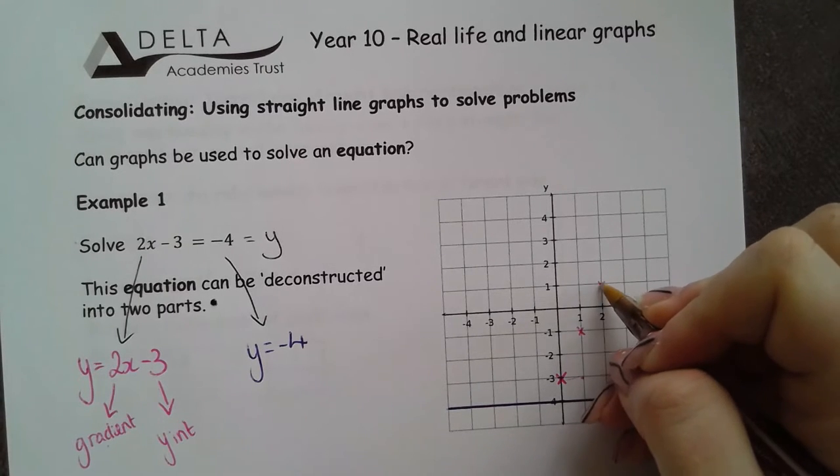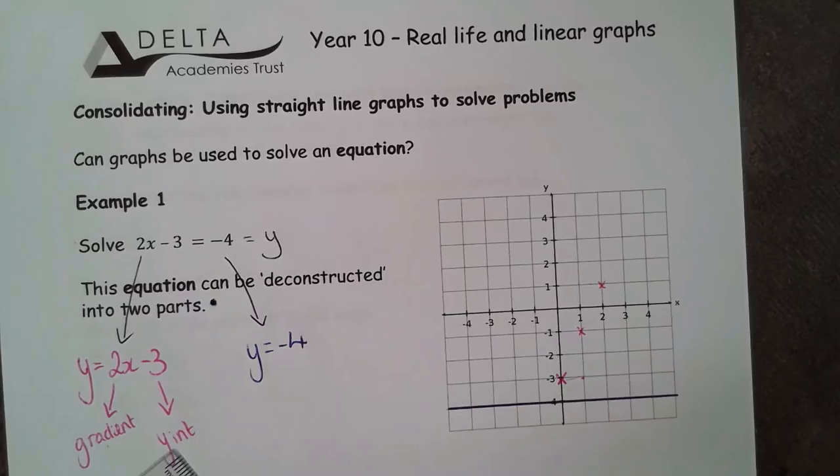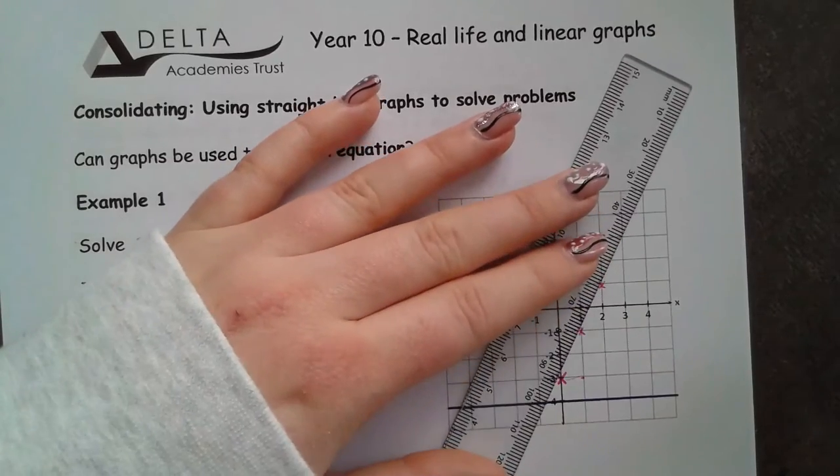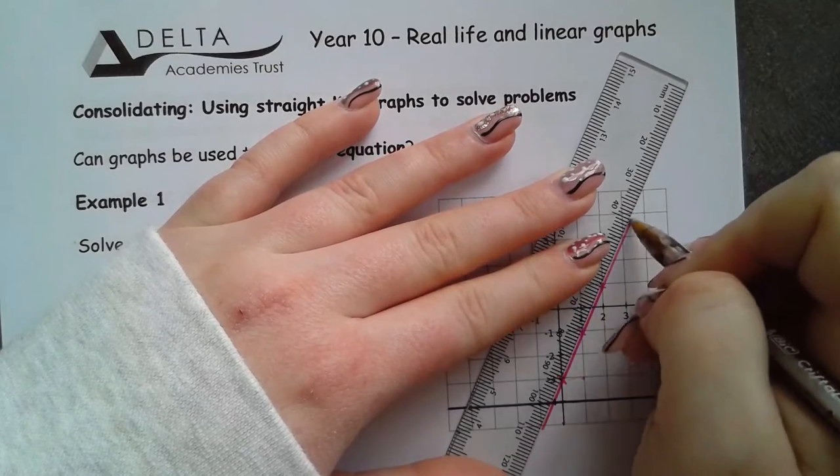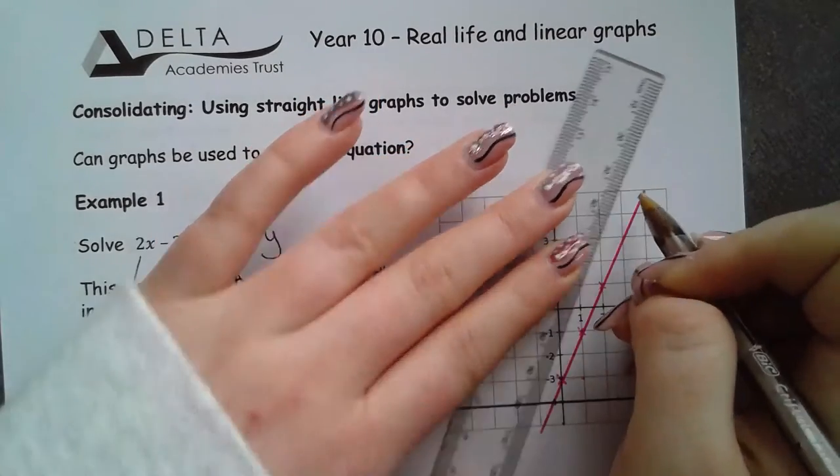1 across and 2 up. Now I've got a few points. All I'm going to do is connect those up. So if I connect those like this that is my line.